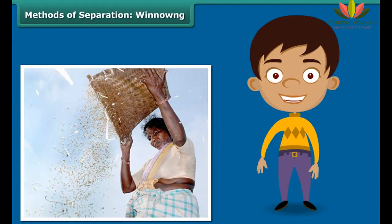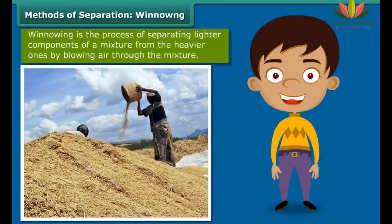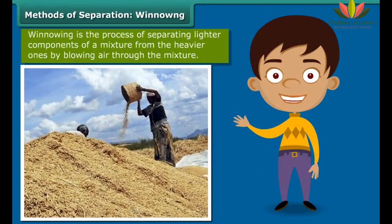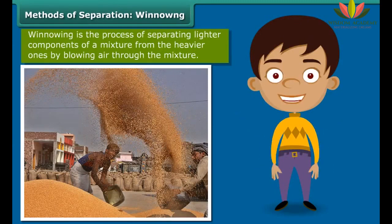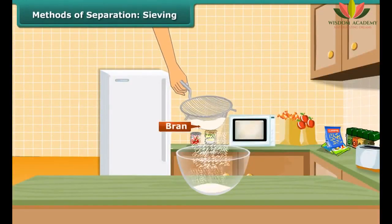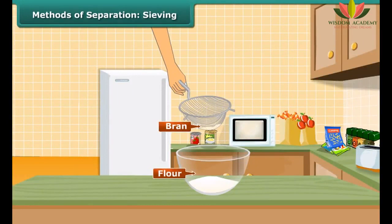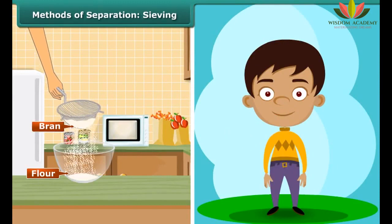Bullocks, oxen and machines known as threshers are also used for this purpose. During your numerous train trips through the countryside, you would have noticed women standing at a height, shaking a basket held over their heads continuously. They are separating the grain from the husk by simply allowing the wind to blow away the husk and other lighter impurities. The heavier grain falls down on the ground in a heap. This process of separating impurities from the grain by allowing a current of air to blow away the lighter impurities is known as winnowing.